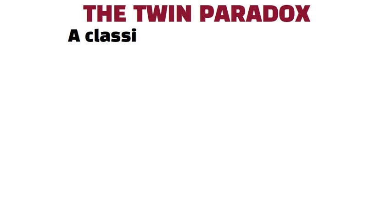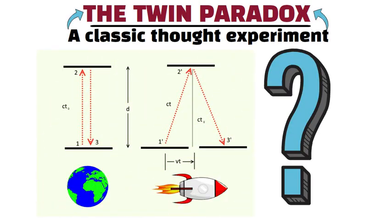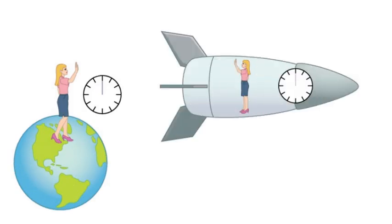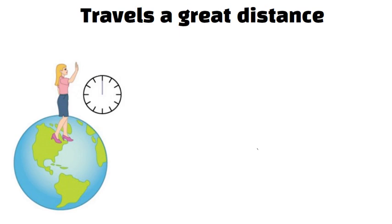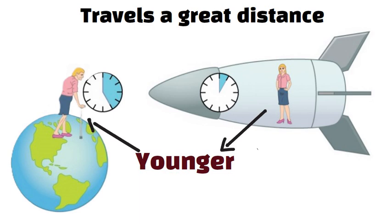The Twin Paradox. A classic thought experiment called The Twin Paradox highlights how velocity time dilation works. Two twins start together. One takes a rocket ride at near light speeds, travels a great distance, then turns around and comes back. Upon return, the traveling twin is younger than the twin who stayed home.